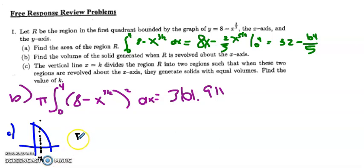And what's happening is that I'm going to integrate from 0 to k, 8 minus x to the 3 halves, all squared dx.